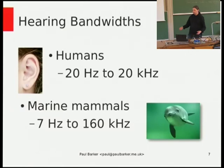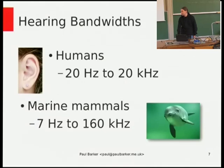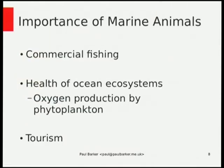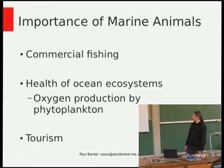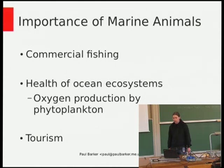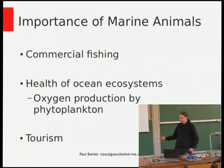Why do we care about marine animals anyway? They're pretty important for commercial fishing — you cause problems with fish and fishermen get unhappy. They're pretty important to the health of ocean ecosystems, which matters to us since a lot of the oxygen we breathe is produced by algae and plankton in the ocean. They're also important to communities for tourism and bring a lot of money into local economies. There's a lot of people who care for different reasons about marine animals, as well as plain environmental concern.